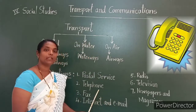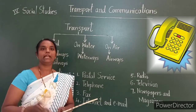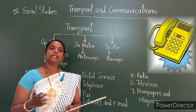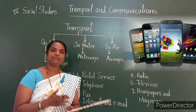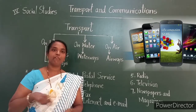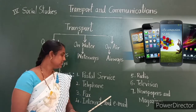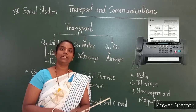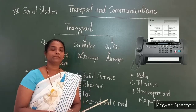Next comes telephone. We can talk to people in any part of the world with the help of a telephone. Landline phones have been replaced by mobile phones. Most people use mobile phones and smartphones, which are very useful all-in-one devices with which we can do many things. Next comes fax. A written document can be sent through a fax machine, and it takes only a few seconds to reach.